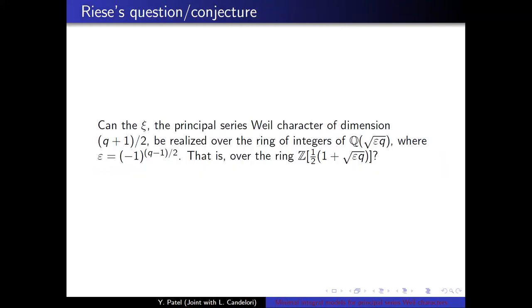And in that paper, he made the following question conjecture. Can the principal series Weil character dimension (q+1)/2 be realized over the ring of integers of Q adjoined with the Gauss sum? That is, over this ring, Z adjoined with 1.5 times 1 plus the Gauss sum.